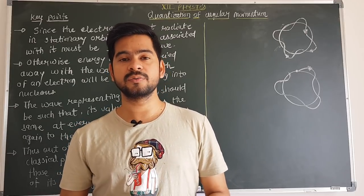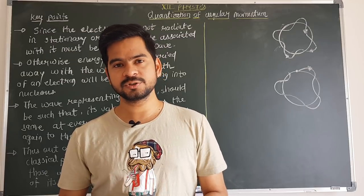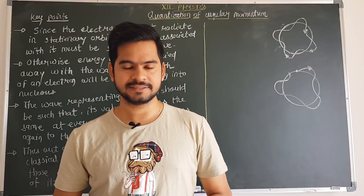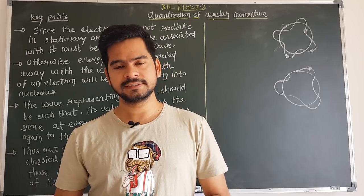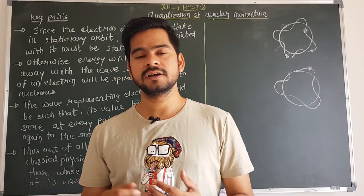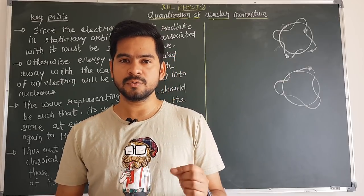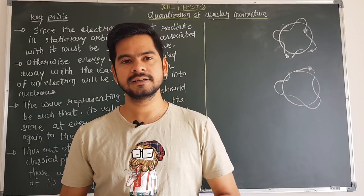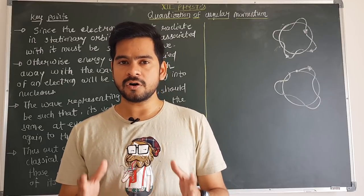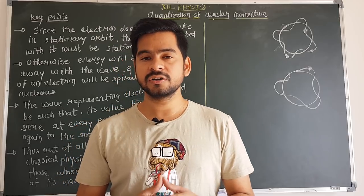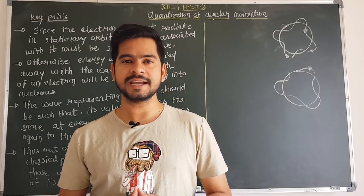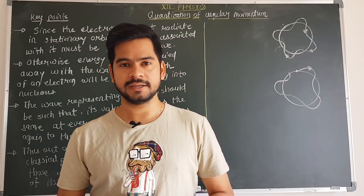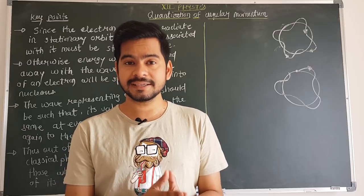In the previous video we also discussed Bohr's postulates, and today's topic is totally based on them. The most puzzling of Bohr's postulates is the second one, in which he states that out of all orbits, the electron selects only those whose angular momentum is an integer multiple of h/2π — meaning angular momentum is quantized.